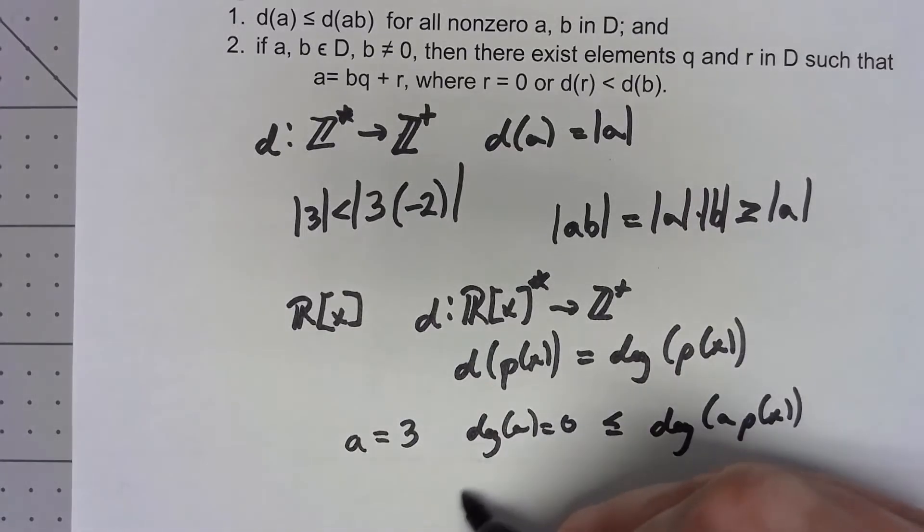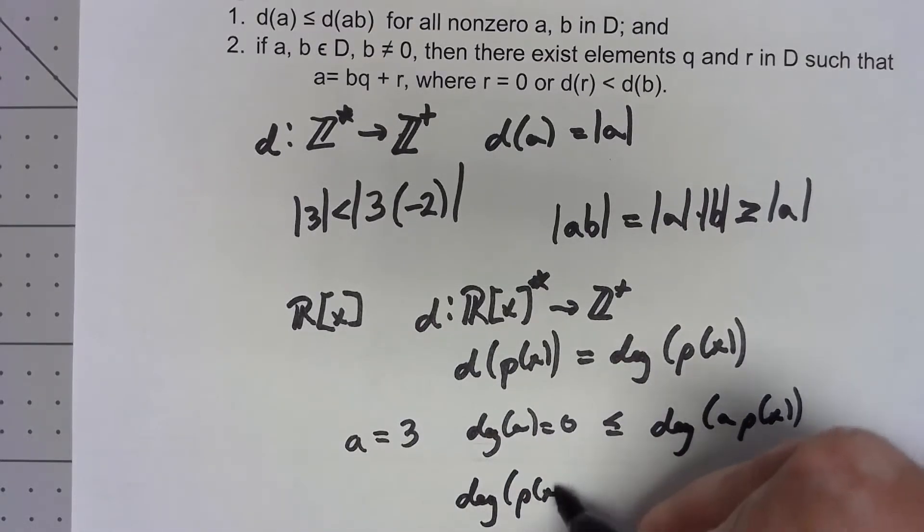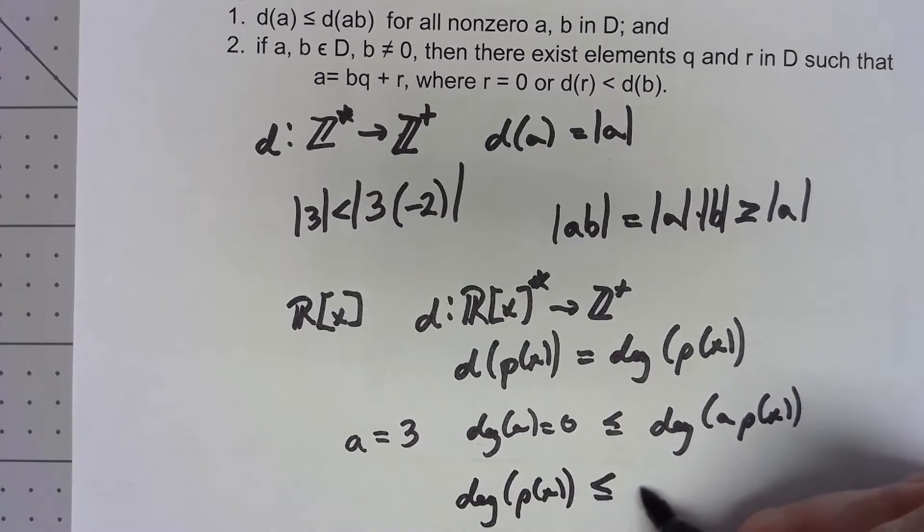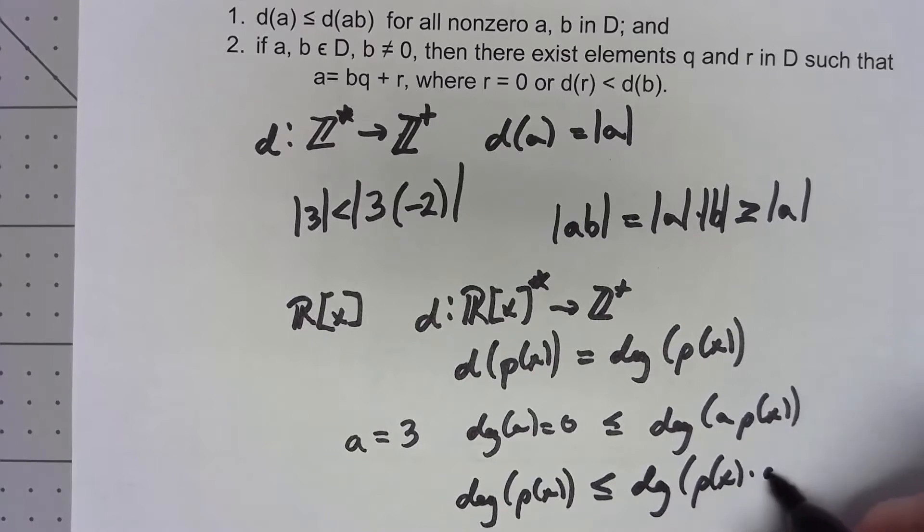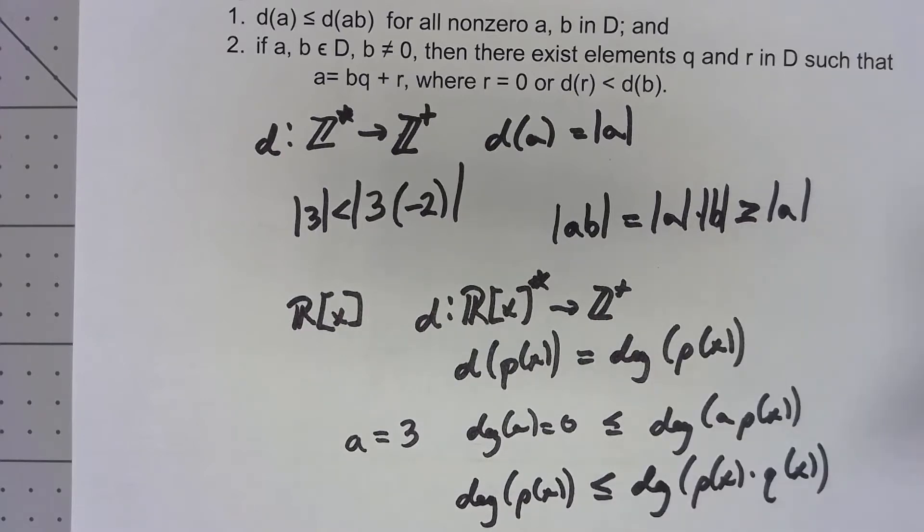And if I take two polynomials, the degree of p(x) is certainly less than or equal to the degree of p(x) times q(x). You can add to the degree by multiplying by another polynomial, we can never subtract from it.